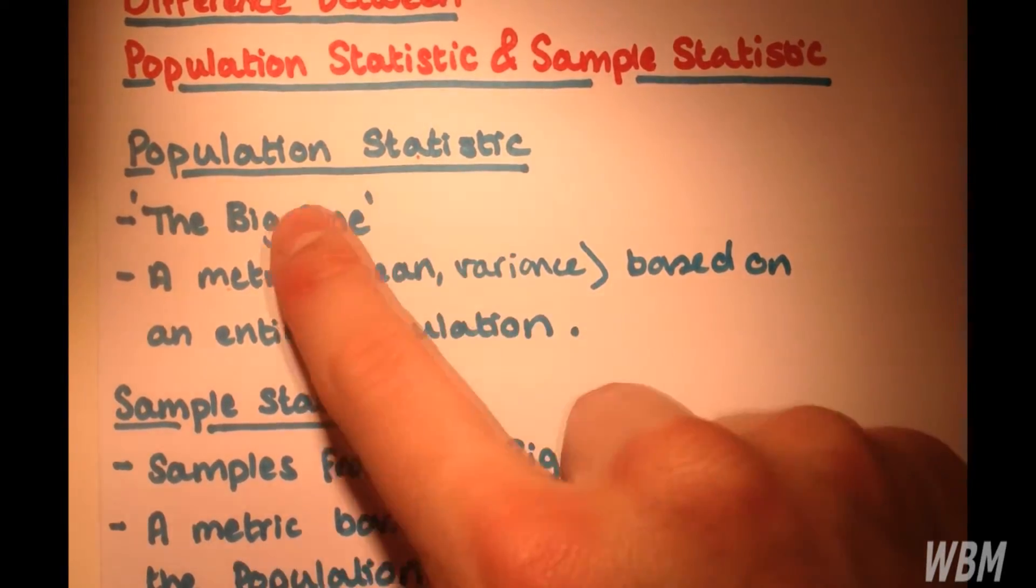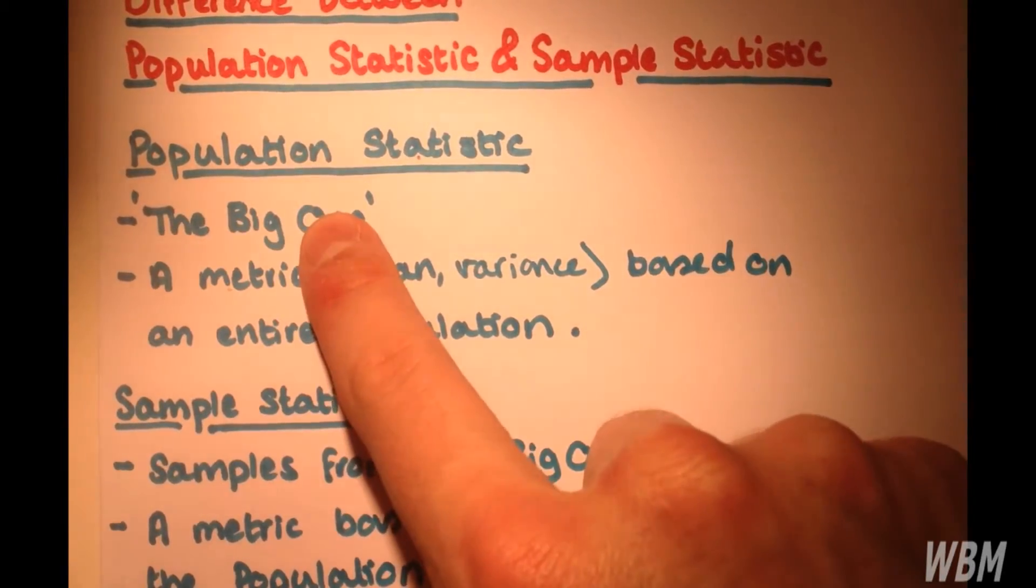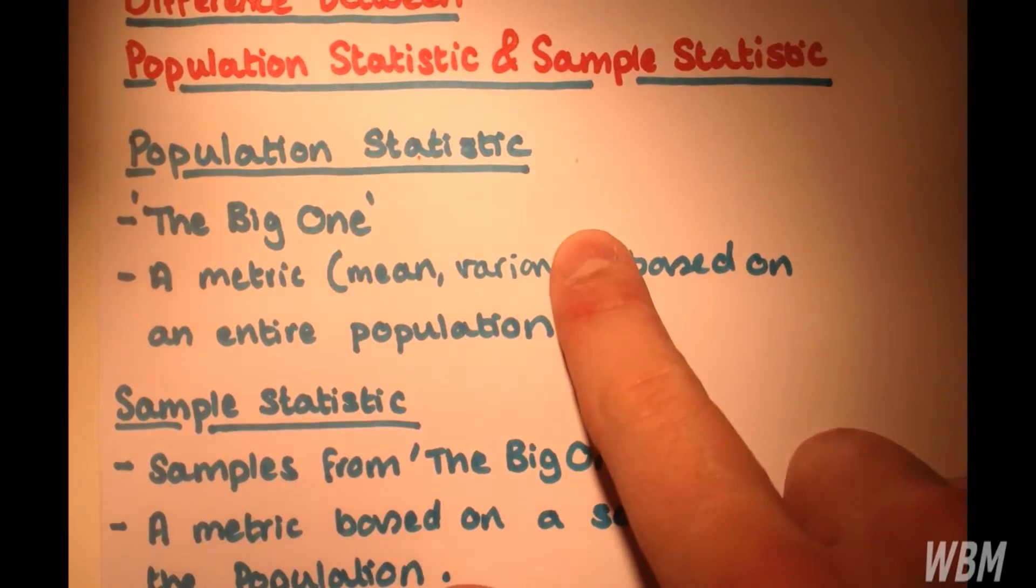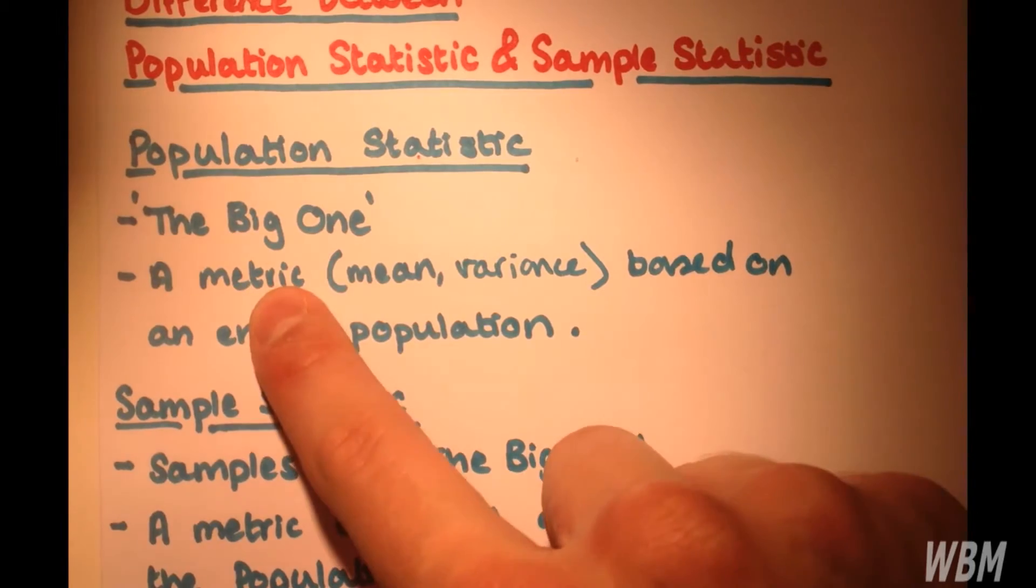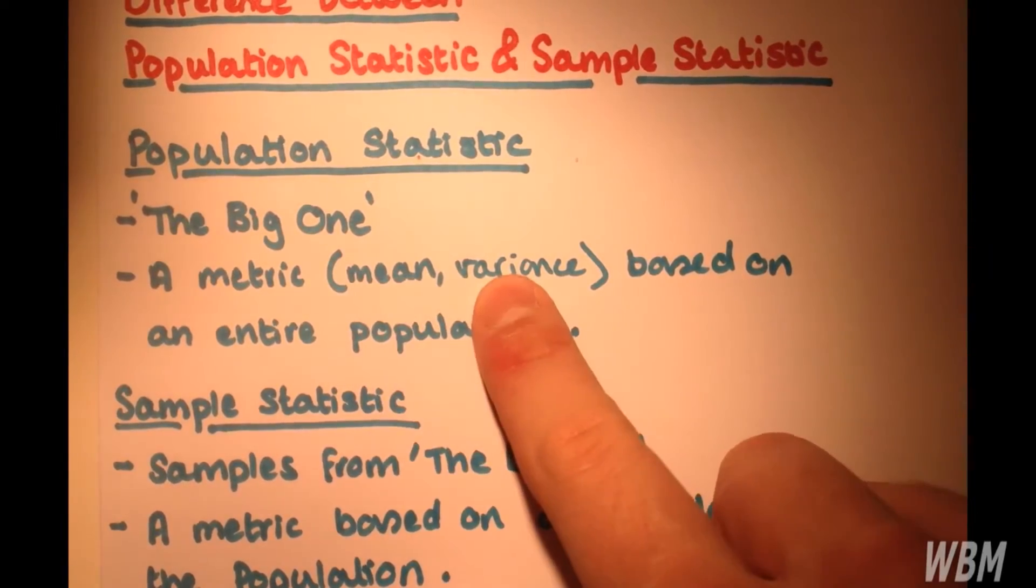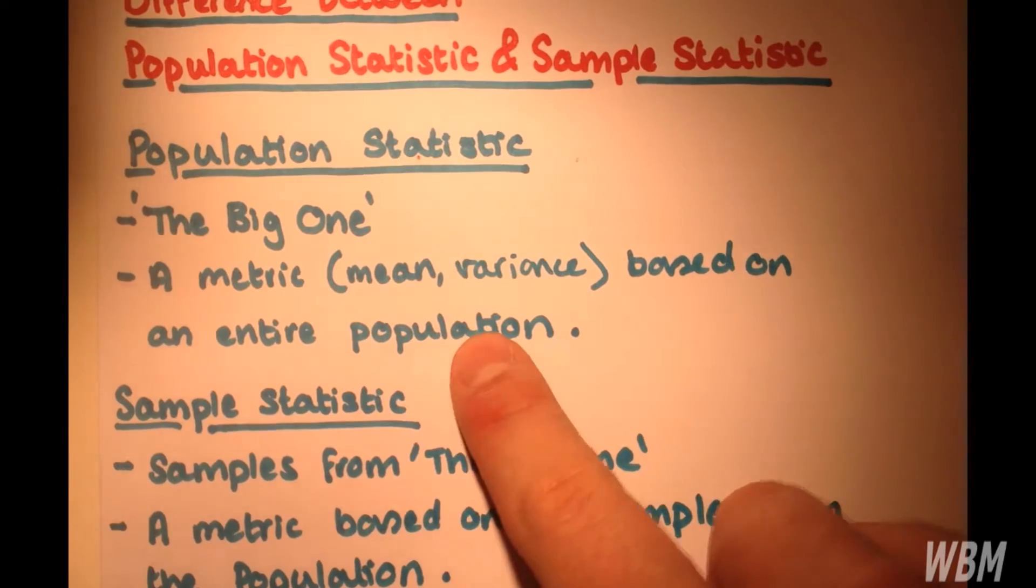So the population statistic - now the population is the big one. The population is everything, the big set of data. And a population statistic is simply a metric, such as a mean or variance, that we get from this entire population.